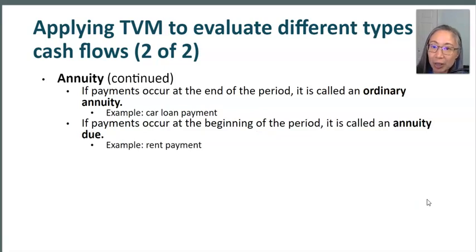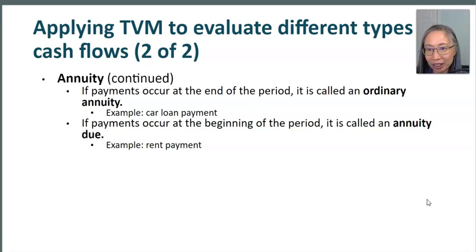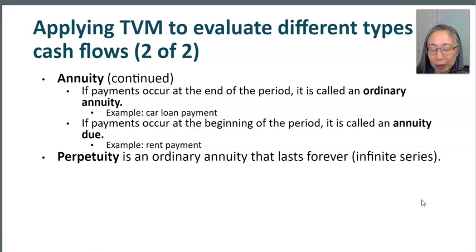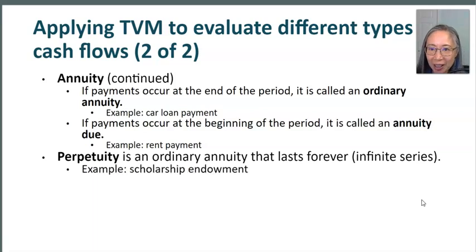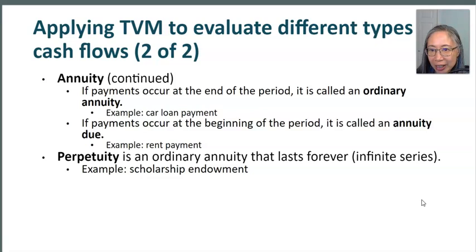An example of annuity due is rent payment. When you sign a lease, you put down your first month's rent at the time of signing — in contrast to a mortgage or car payment. There's also a special type of annuity that lasts forever, called a perpetuity. An example is an endowment: if someone wants to endow a scholarship, the endowment typically has no end date, meaning the scholarship will continue forever.